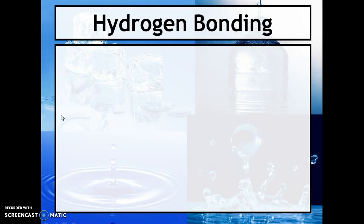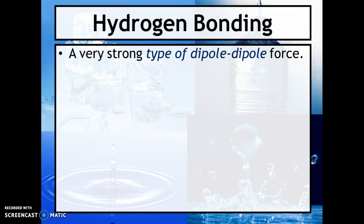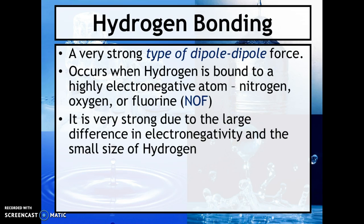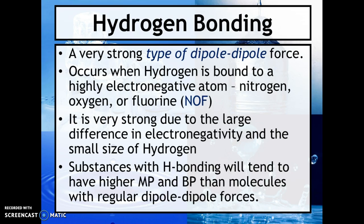Back to hydrogen bonding — technically it is an incredibly strong dipole-dipole force. It occurs when hydrogen is bonded to something very electronegative. A helpful abbreviation is NOF: if it's nitrogen, oxygen, or fluorine, there's likely hydrogen bonding. It's very strong because of the electronegativity difference, and because hydrogen is so small. Substances with hydrogen bonding have higher melting and boiling points than regular dipole-dipole forces.